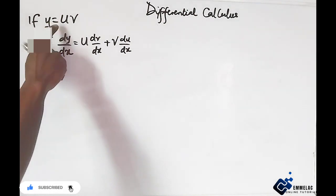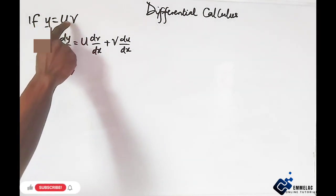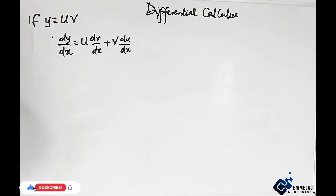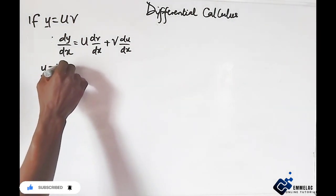Using the first principle now, we have y equals uv. Now according to the first principle, when we add a small change to all the variables, we have y plus change in y equals u plus change in u times v plus change in v.